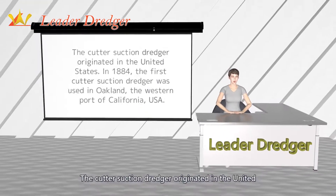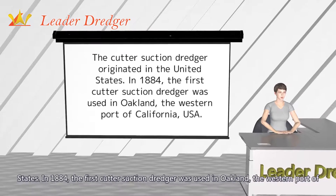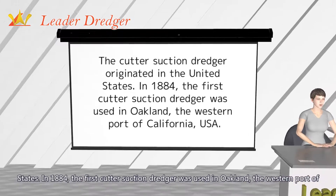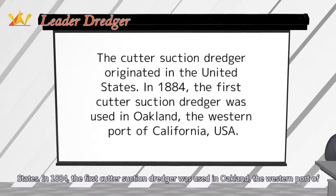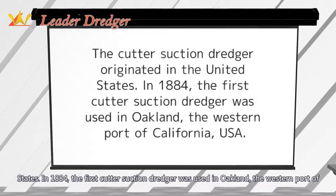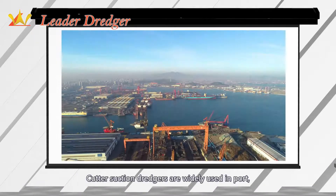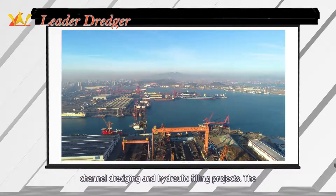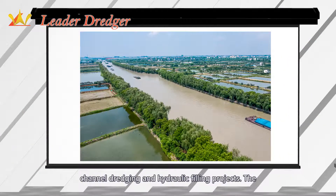The cutter suction dredger originated in the United States. In 1884, the first cutter suction dredger was used in Oakland, the western port of California, USA. Cutter suction dredgers are widely used in port and channel dredging, and hydraulic filling projects.